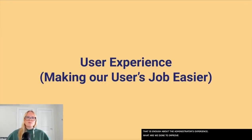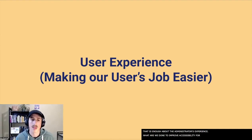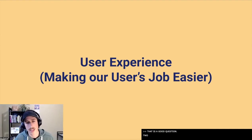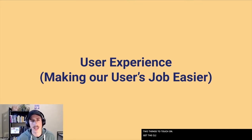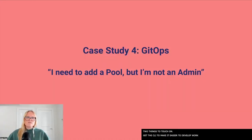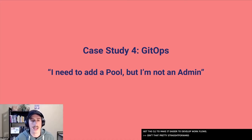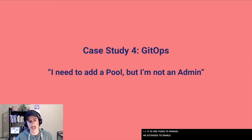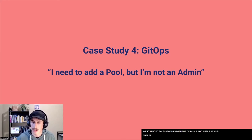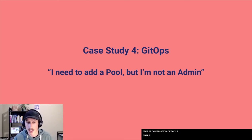Two things we can touch on to improve Airflow's accessibility are the use of Git operations for managing Airflow configuration, as well as an opinionated CLI we've built to make it easier to develop workflows. Beyond just managing Airflow config in GitHub, we've extended our tooling to enable the management of pools, connections, variables, and even users via GitHub. This is done using a combination of tools: EJSON, an open source tool created at Shopify for encrypting and decrypting JSON files, the manifest files mentioned earlier, as well as some custom loader scripts that tie it all together.